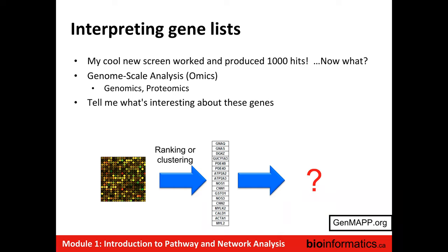Single cell transcriptomics experiments — a single experiment provides information like 5,000 RNA-seq experiments in one experiment. So what we want to know is: what's interesting, what's novel, what new discoveries can I make, what did I learn from this data? One of the first things we normally start with is to ask the question: what's interesting about the set of genes or other entities — metabolites, proteins, other things — that come out of large-scale omics analysis?